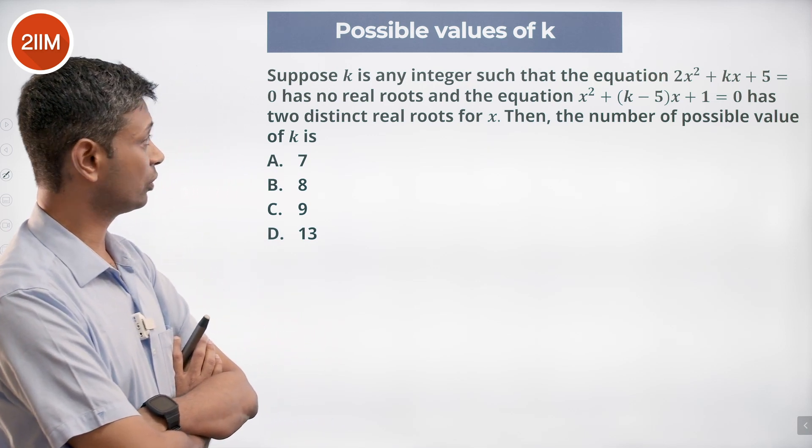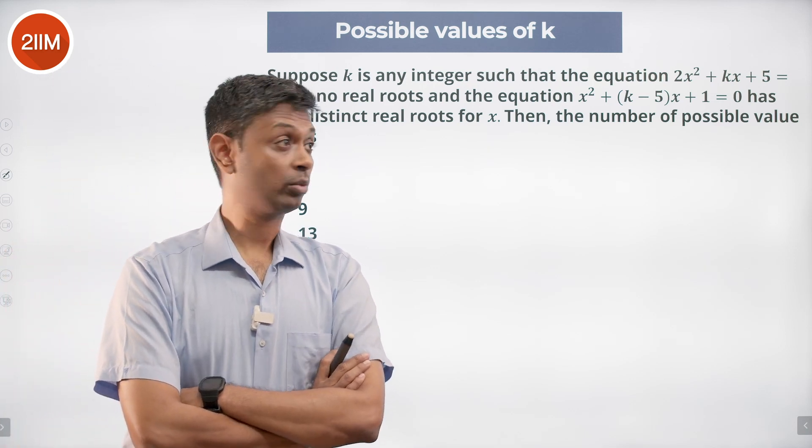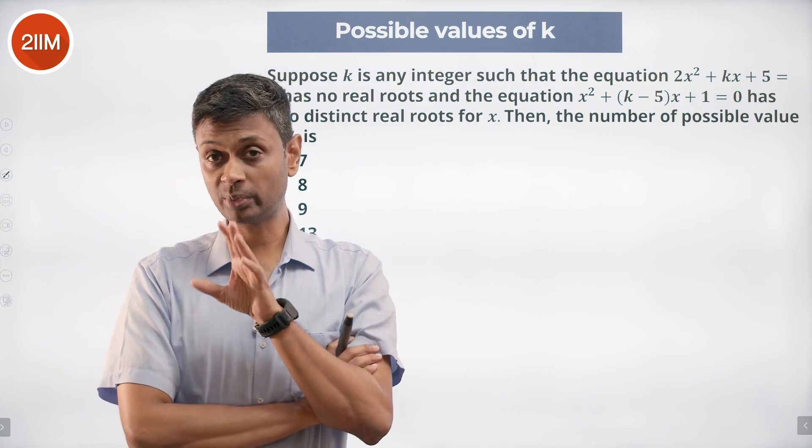Then the number of possible values of k is... The first discriminant should be less than 0, the second discriminant should be greater than 0, not even greater than or equal to.